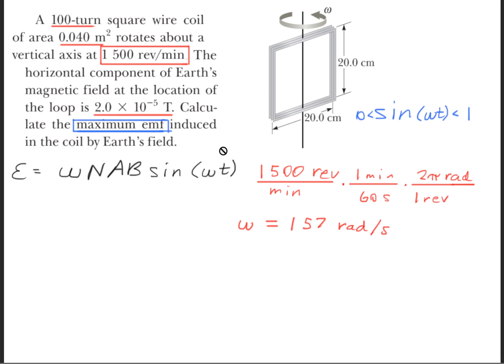But we just have to remember that when sine of whatever this quantity may be is equal to 1, we're going to have the maximum EMF. So now we'll go ahead and plug in the rest of the quantities given, and we'll get a maximum EMF of 0.013 volts.